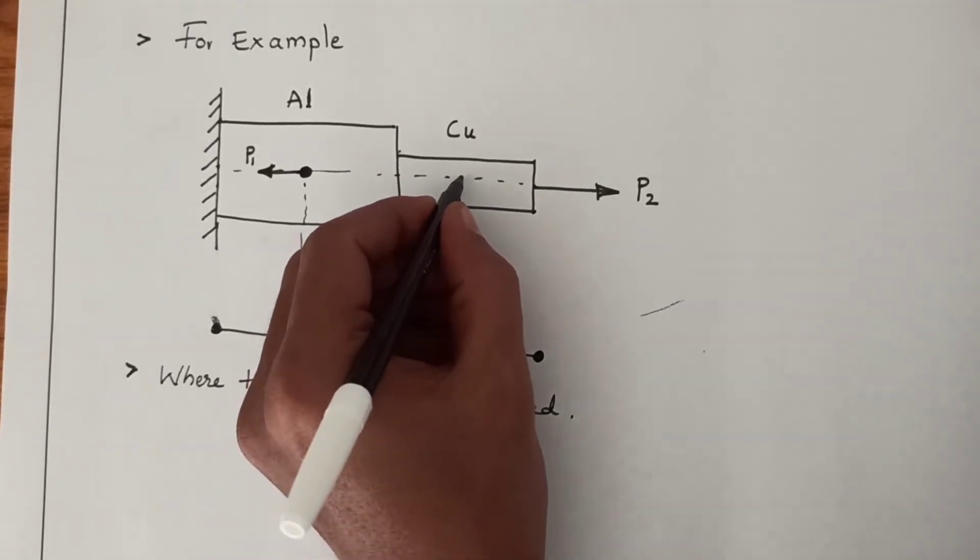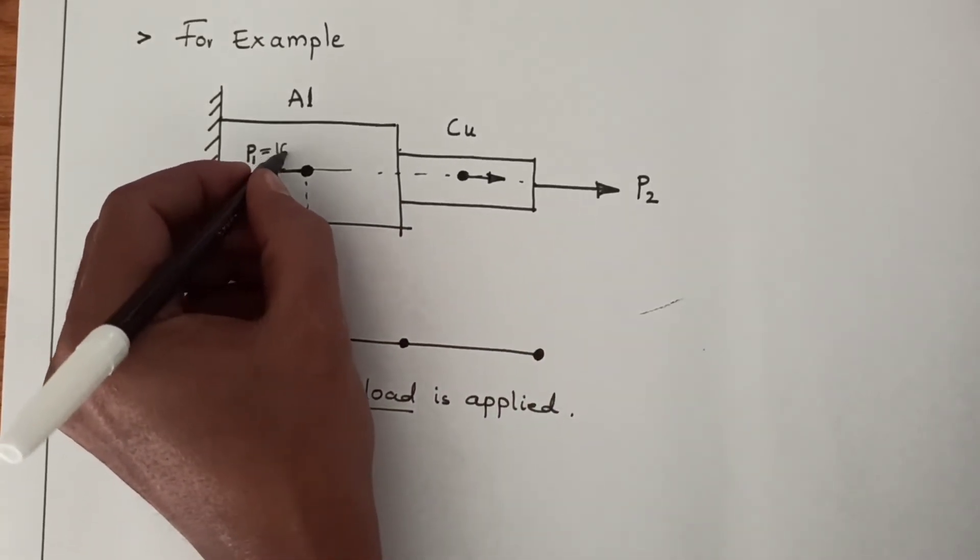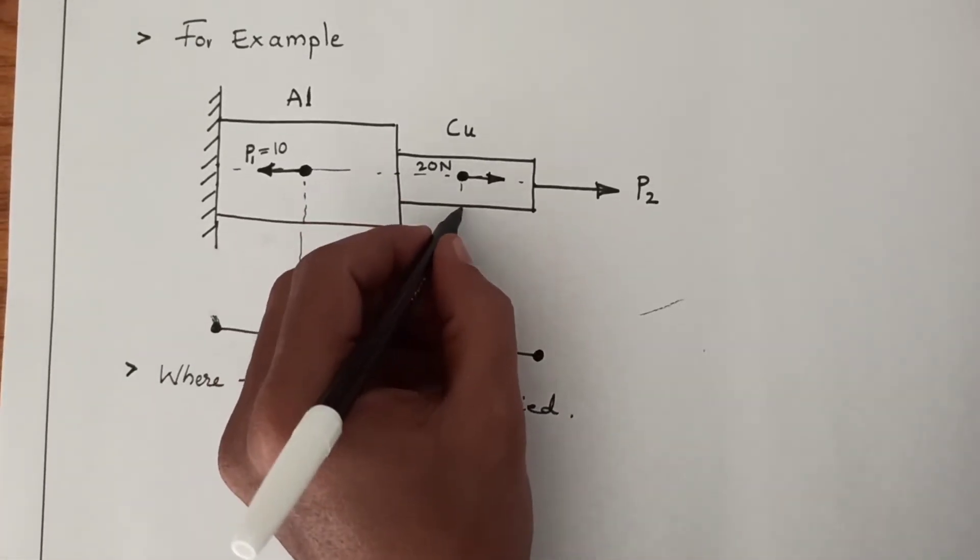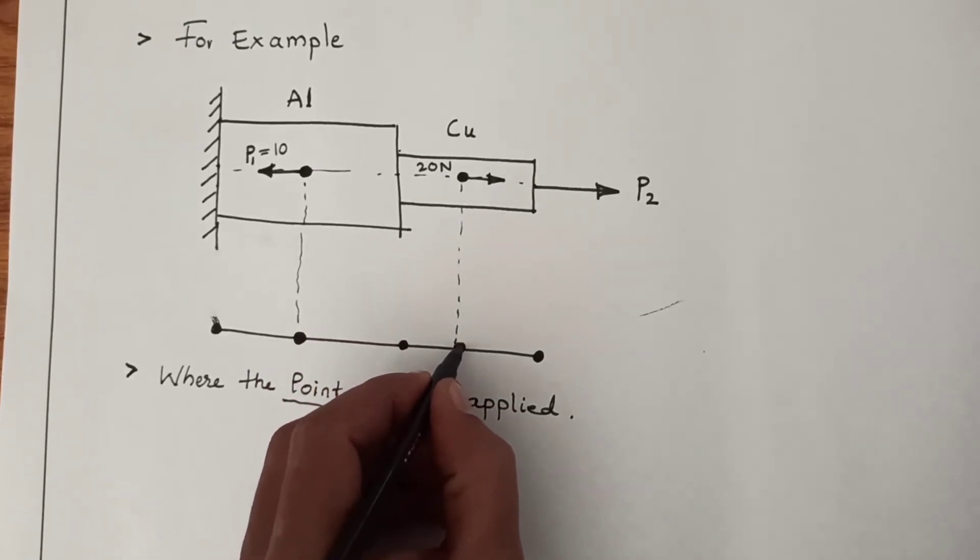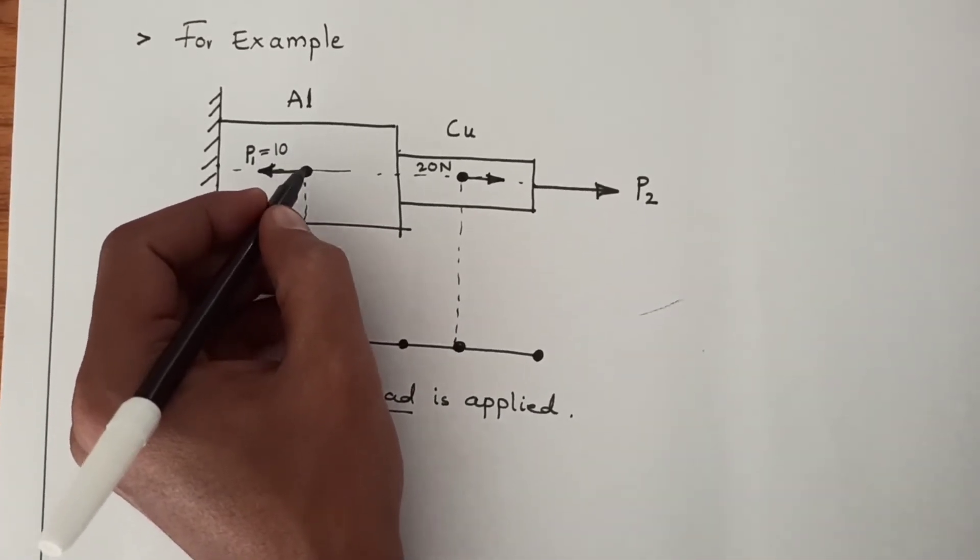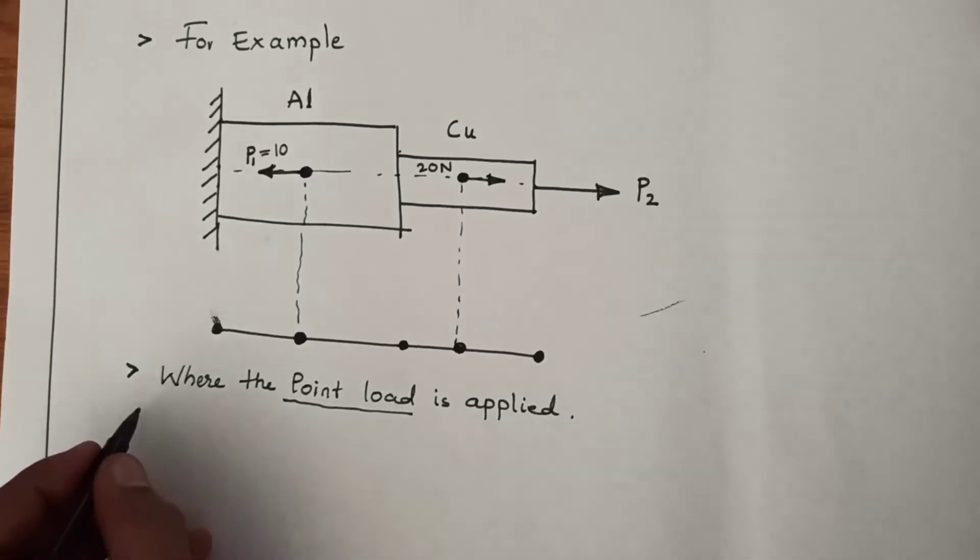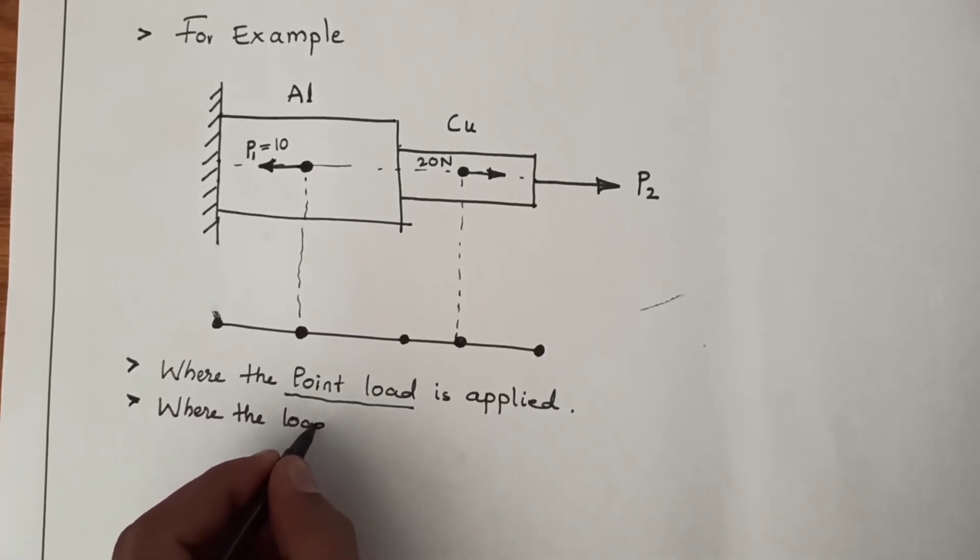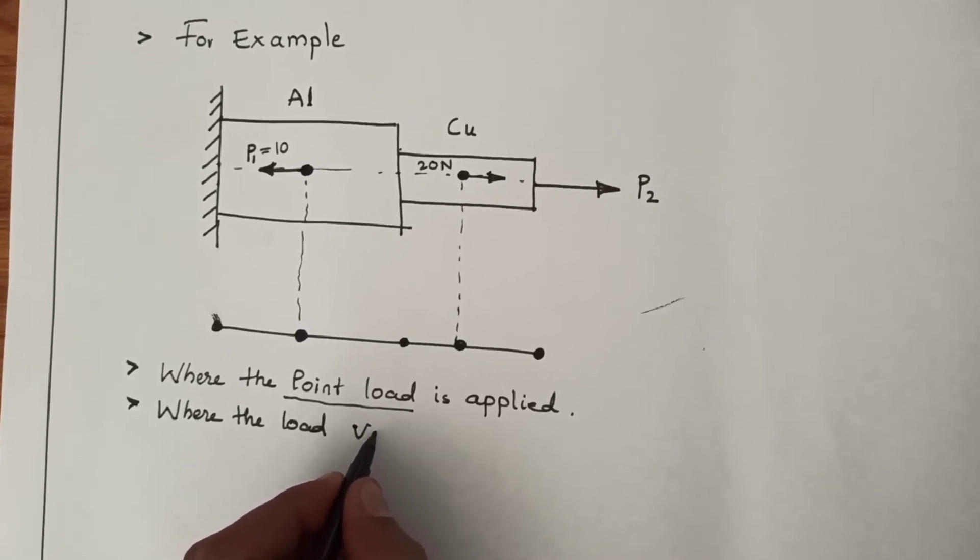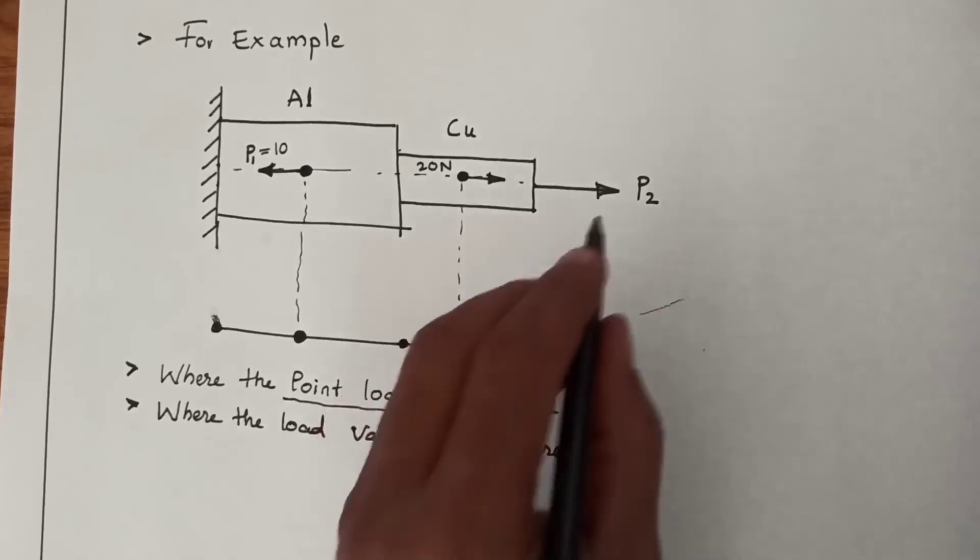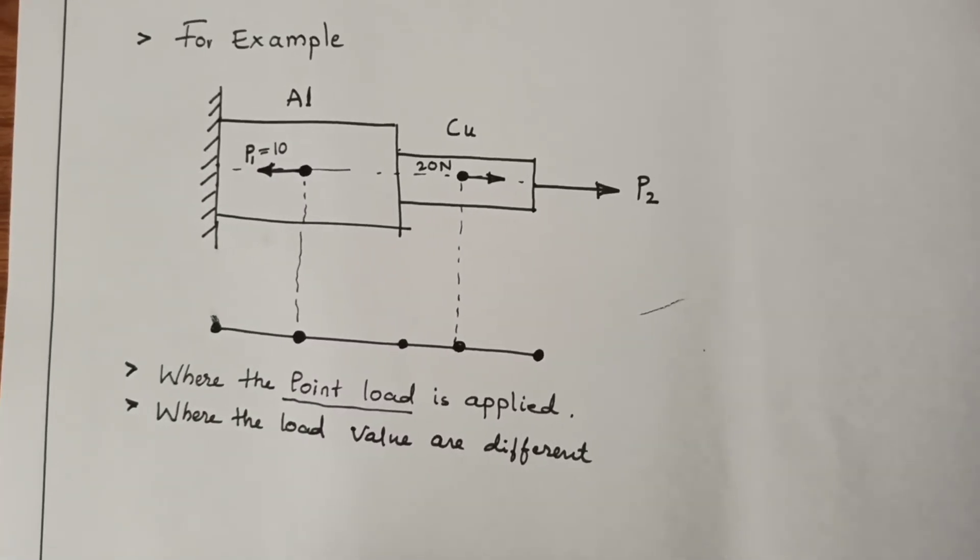Now for example if I have to apply one more load here in the same direction, let us say 10 and this is 20 Newtons. So again here also there may be another node. When the load values are different, P1, P2, P3 are different, so you have to take the separate node for them.